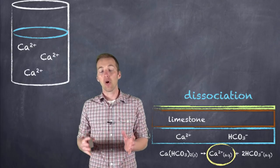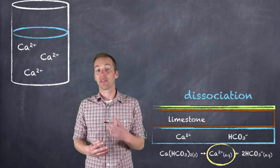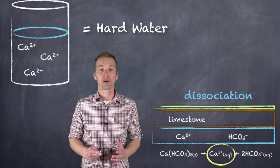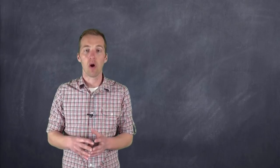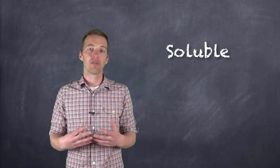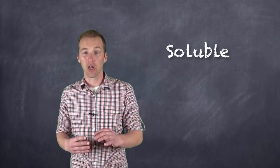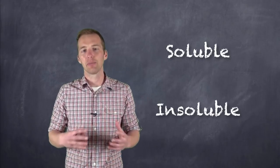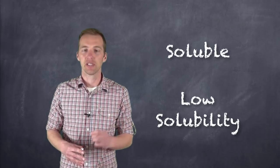The water in our homes has these divalent calcium ions, and we refer to water with a high concentration of these calcium ions as hard water. When we talk about substances that are readily dissolved in water, we refer to them as being soluble — something that dissolves in water to a large extent is considered soluble, while something that dissolves to a very low extent is considered to have low solubility. Sometimes we say insoluble, but most things will dissolve in water to some extent, so low solubility is a preferred term.